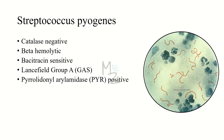Streptococcus pyogenes is a catalase-negative bacterium. Catalase is an enzyme released by certain bacteria, but not all — strep pyogenes does not release it. What that enzyme does will be touched upon in the lab diagnosis section. Streptococcus pyogenes is further classified based on serology — the Lancefield classification — hemolysis, and biochemistry.